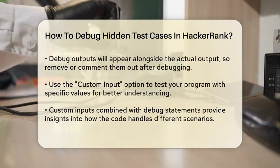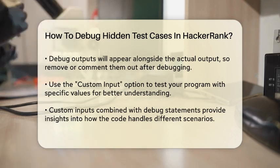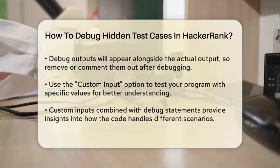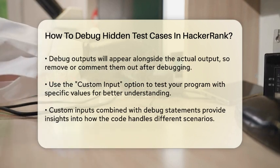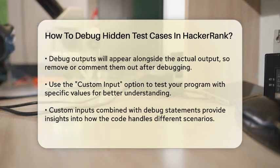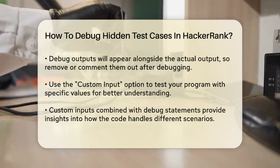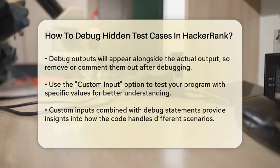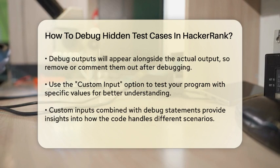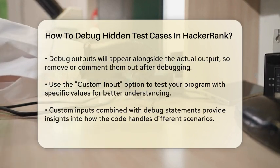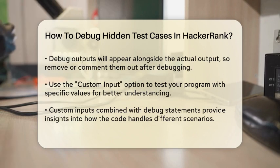Another powerful tool is using custom input values. If the test allows it, you can click the Custom Input option to test your program with specific input values. This can help you see how your program behaves with different inputs and can be especially useful when combined with debug print statements. Just enter your custom input, run the code, and see the output and any debug messages in the Your Output area.